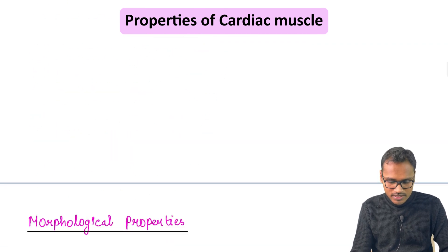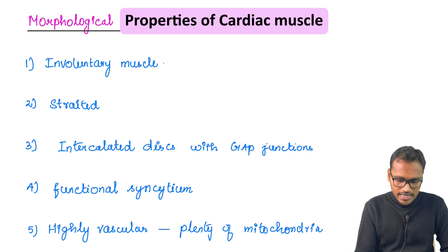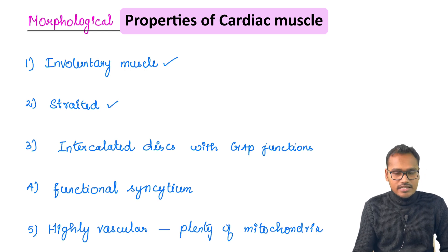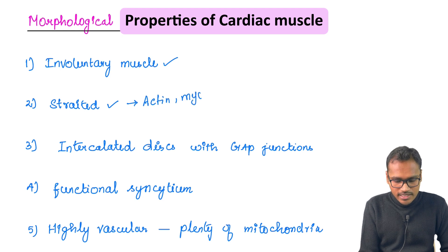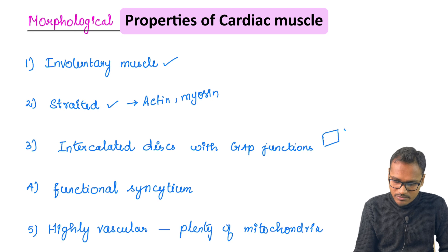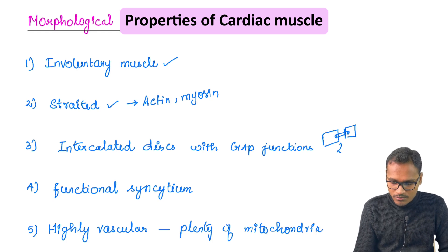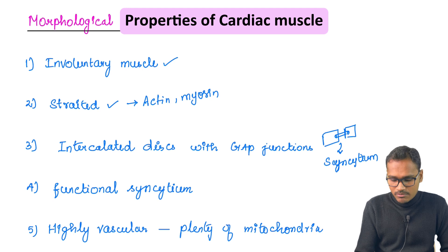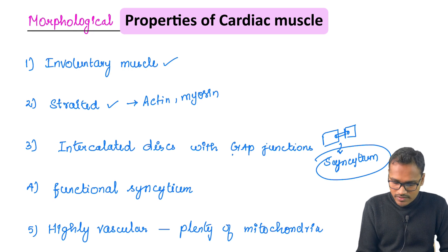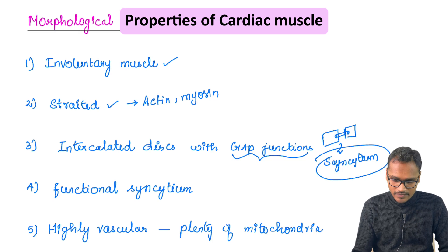Coming to the morphological properties: the cardiac muscle is an involuntary muscle — it is not under voluntary control. It is striated because it has active myosin components. It has intercalated discs with gap junctions, which we saw in previous videos. The gap junction connects the cytoplasm of two cells, and this is responsible for the syncytial property of the heart — all atria can contract together and all ventricles can contract together. This makes it a functional syncytium.